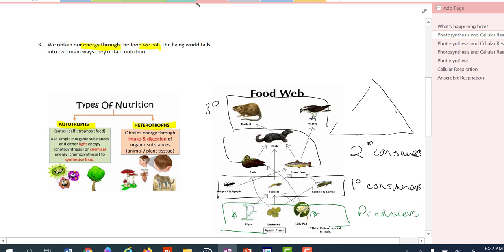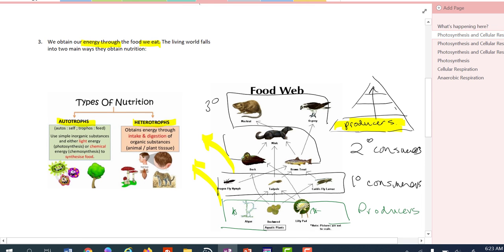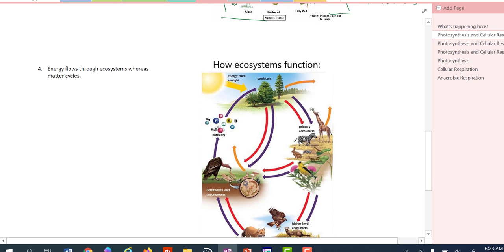What's really important in any food web is that we'll typically see this sort of pyramid shape based on numbers. What that means is your greatest population of organisms occurs at the base, and there's fewer and fewer organisms as you go up the food chain. The reason for that is that energy at each level is lost.